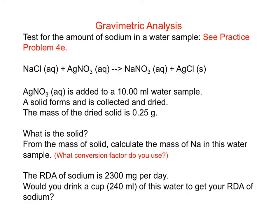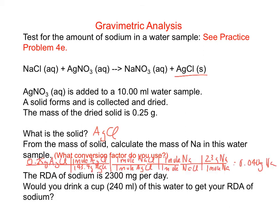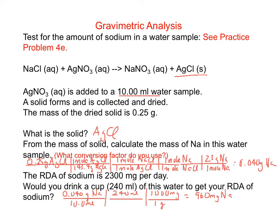Let's do a practice problem involving this reaction. Stop the video, read the problem statement, and answer these questions. The solid is the precipitate that formed. We've got to do a few conversions to calculate the mass of sodium in the water sample. For the last question, there is 0.040 grams of sodium in a 10 mL water sample, so in 240 mL there is 960 milligrams of sodium — we would not get the RDA of sodium from drinking one cup of this water.